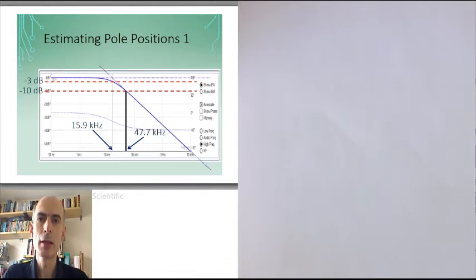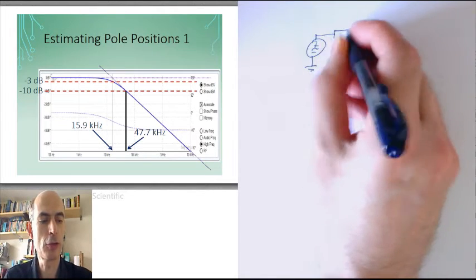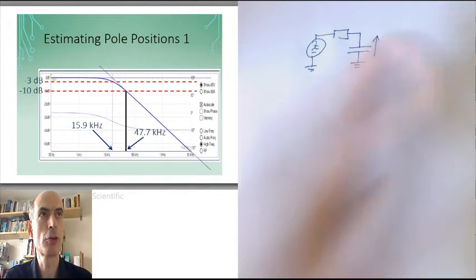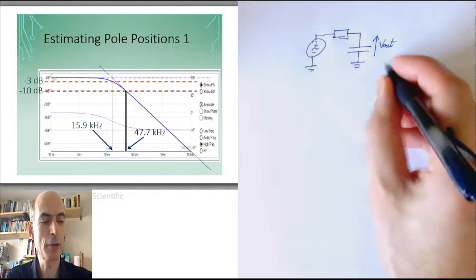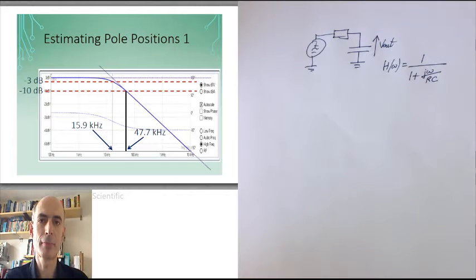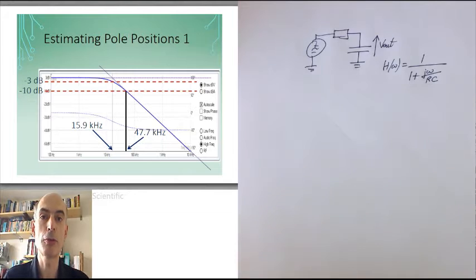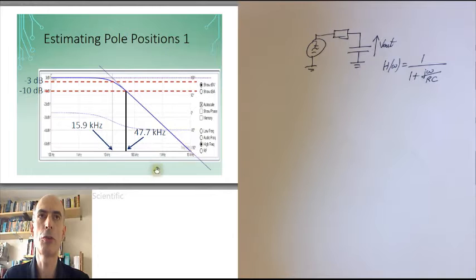We'll start with this one. It's a fairly simple case — a response with just one pole in it. This would be the characteristic we might get if our circuit had a voltage source, a single resistor leading into a capacitor, and the output was the voltage across the capacitor. The frequency response of this circuit, h of omega, is 1 over 1 plus j omega over RC. It therefore has just a single pole, and we would expect the amplitude response to be horizontal at low frequencies, then to head down at 20 dB per decade at high frequencies — and that's exactly what we see on this graph.